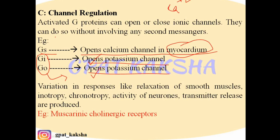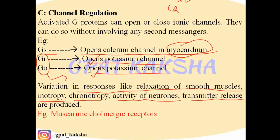The variations in responses through channel regulation include relaxation of smooth muscles, changes in inotropy (force of contraction), chronotropy (rhythm, such as heartbeat and respiration), activity of neurons, and transmitter release. Examples of the channel regulation pathway are muscarinic cholinergic receptors, which will be discussed in detail during the study of the autonomic nervous system.